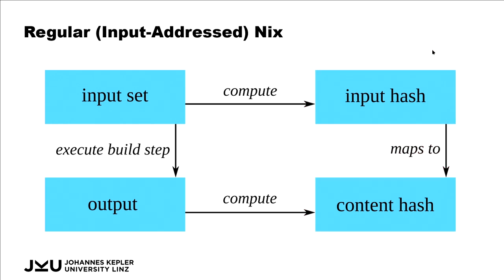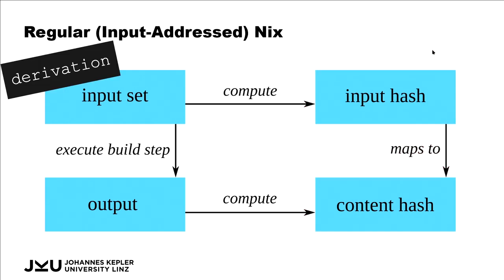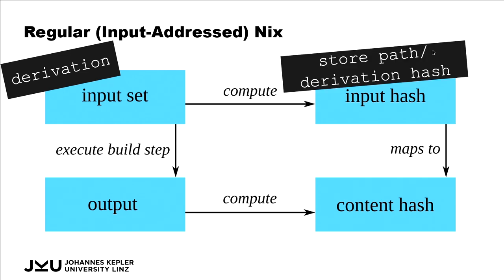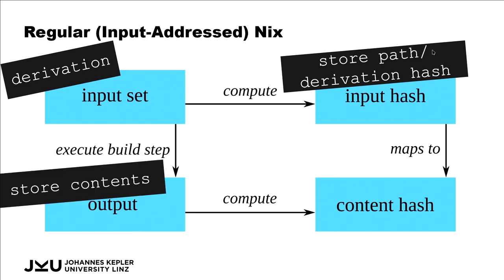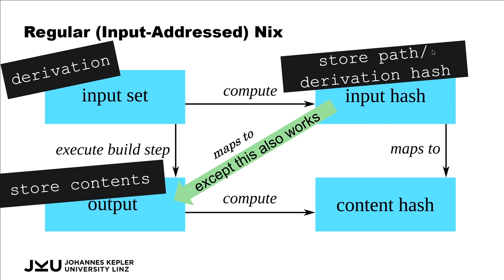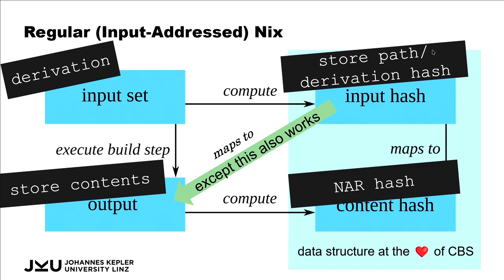You can also just map from the input hash directly to the output, and Nix actually does that. If we look at this in terms of what Nix is doing: the input set is a derivation, the input hash is a store path which boils down to a hash of the derivation, and then the output is the store contents. That's how the store works, because the store path is the address we use to get to the store contents. The other construction also exists in Nix — it's the data structure used for caching, where we sign the input hash together with the content hash, namely the NAR hash.